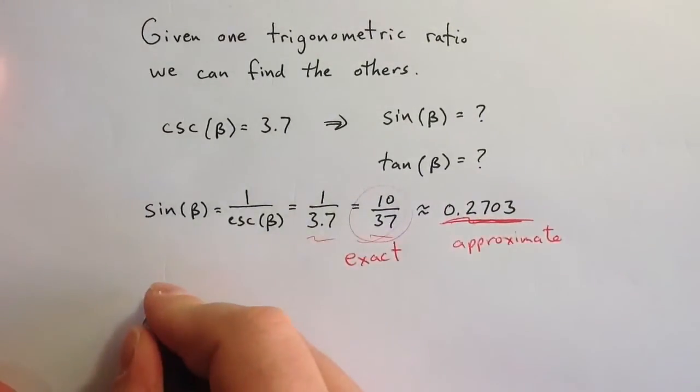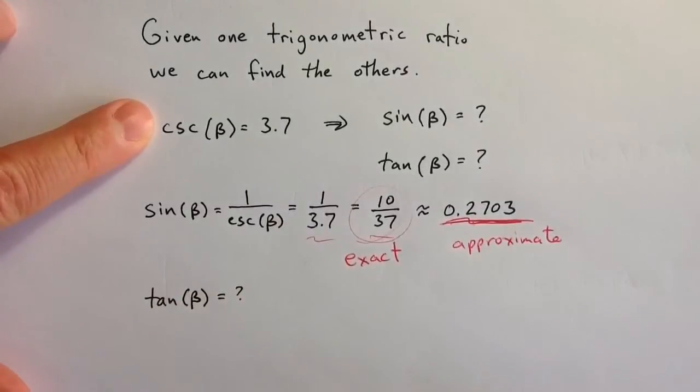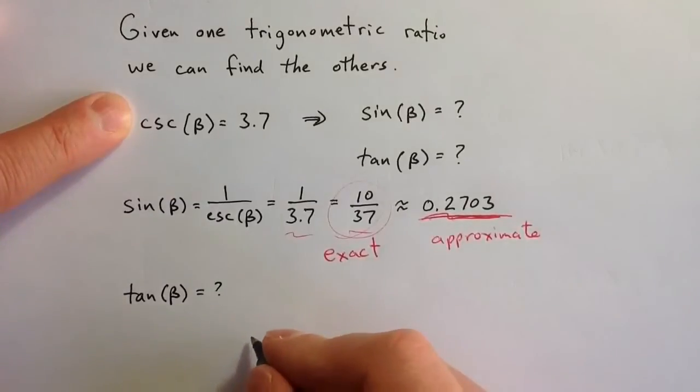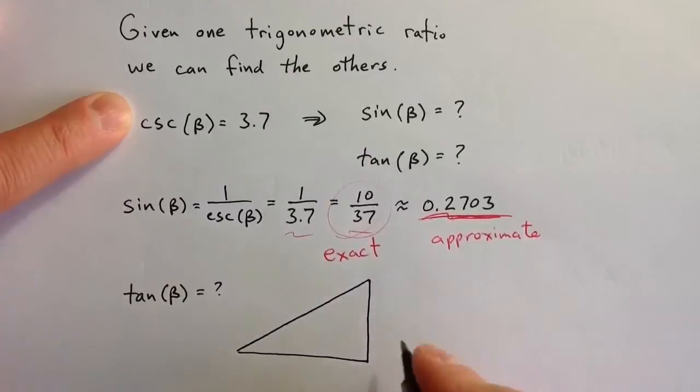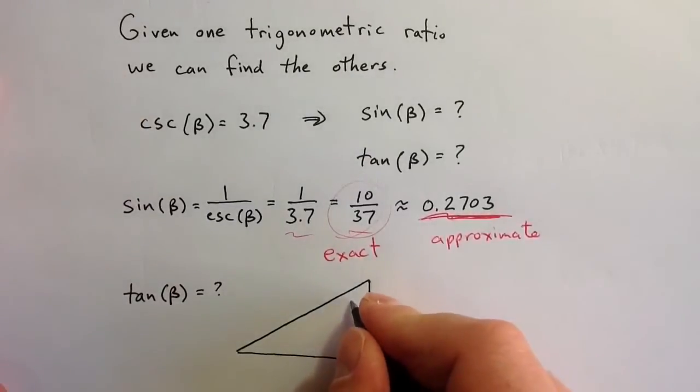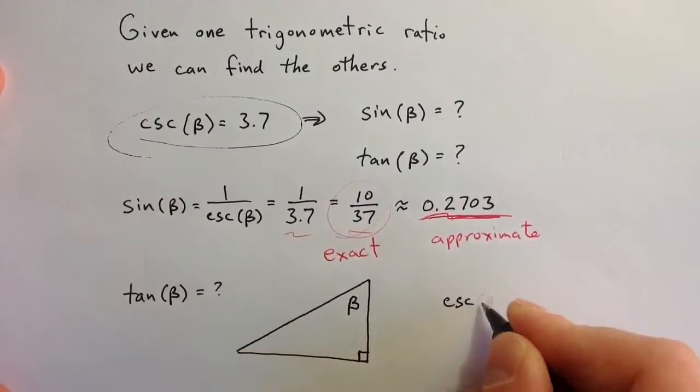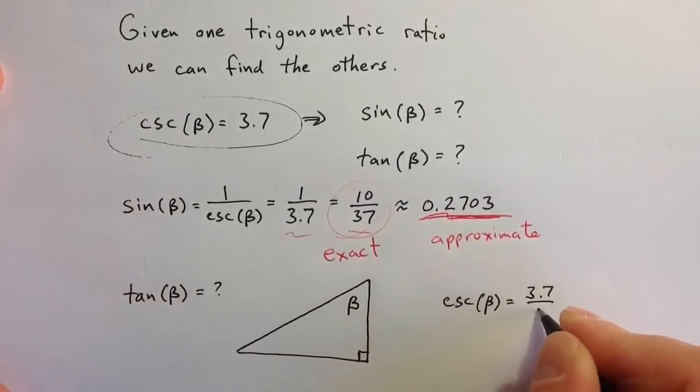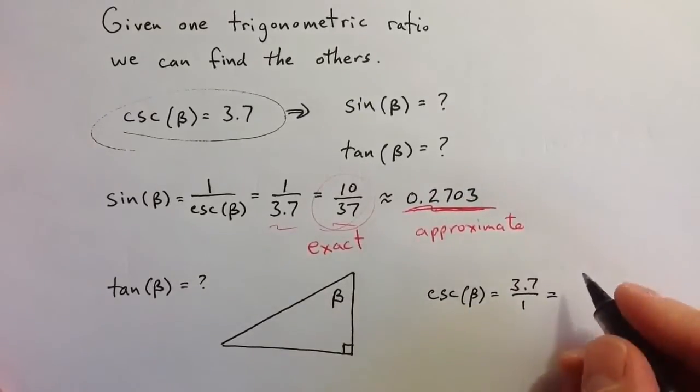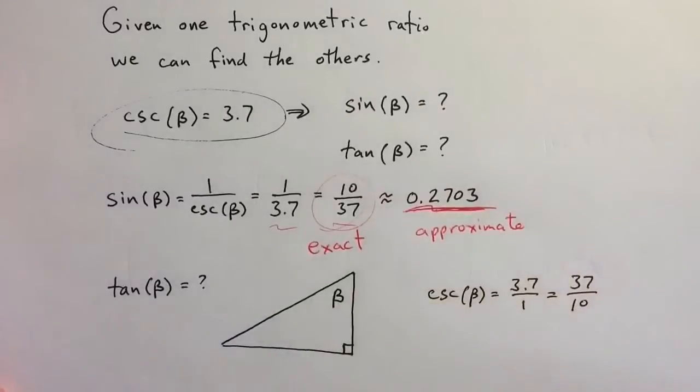To find tangent of beta, we can use the information that's given about cosecant to build a triangle for some angle beta that has that cosecant value. If I choose one of my angles to be beta, cosecant of beta is 3.7. That means cosecant of beta, I can think of that as a fraction 3.7 over 1, or I could think of it as 37 over 10. And that gives me side lengths for the triangle. Cosecant specifically is the hypotenuse over the opposite side, and so the hypotenuse would be 37 and the opposite side would be 10.